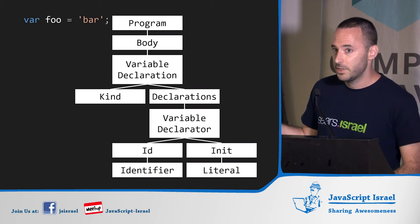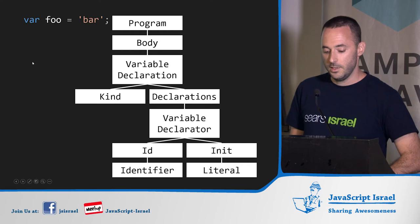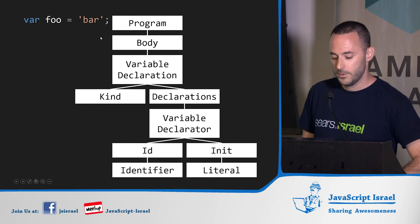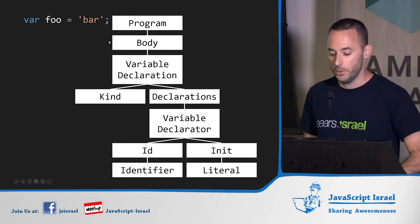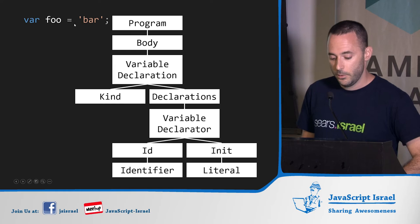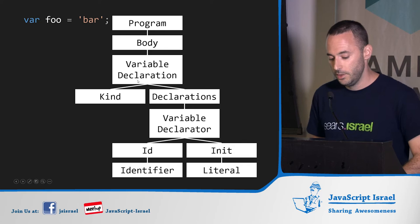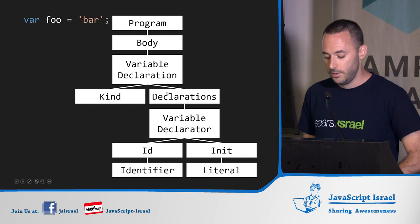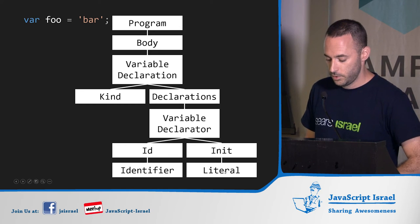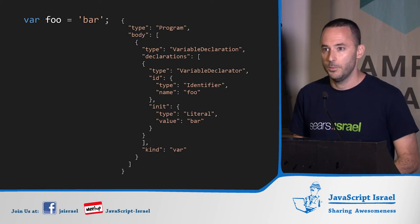Here's a simple example of code and its matching AST. The simplest program: 'var foo = bar'. The tree always has a root node called 'program' with a body. In this case, we only have one statement — a variable declaration. It has the kind, which is 'var', and the variable declarator, which contains the identifier and the literal. This is just a JSON object, which is the exact same representation of the same syntax tree.